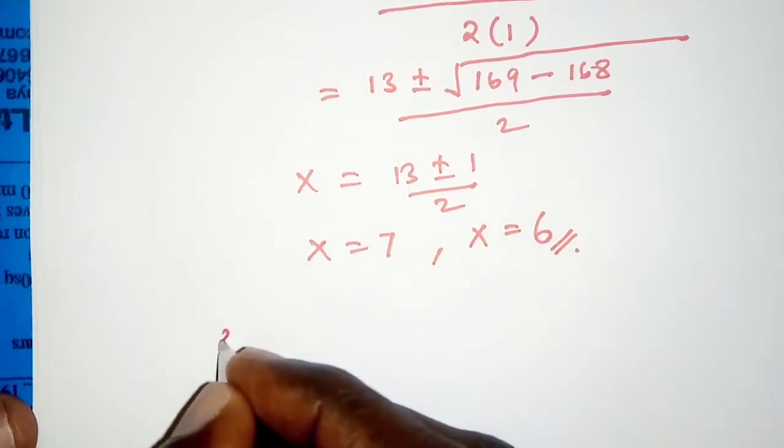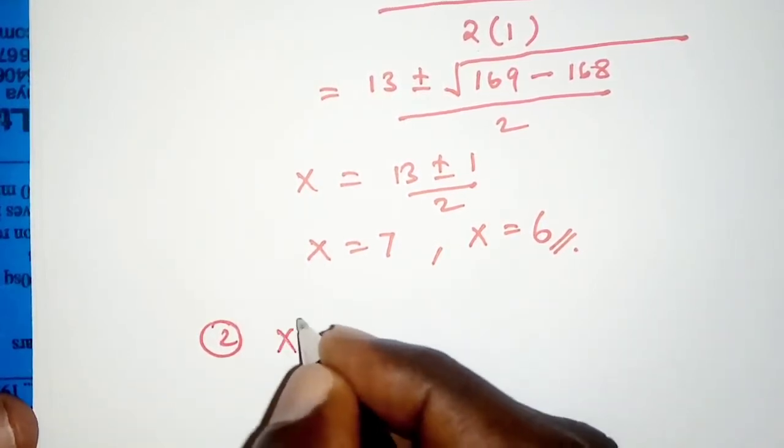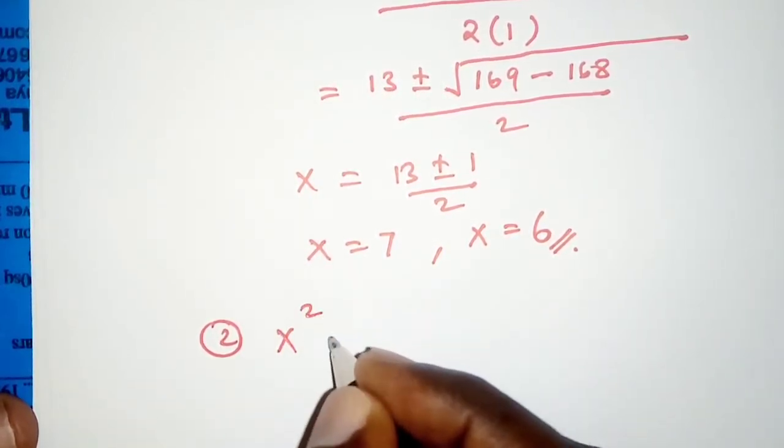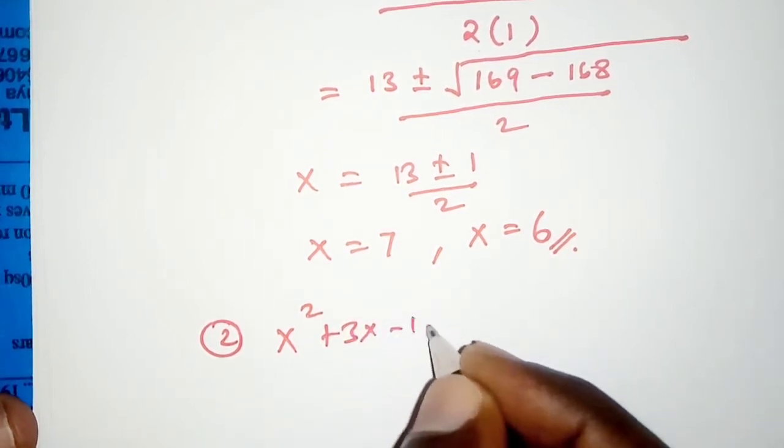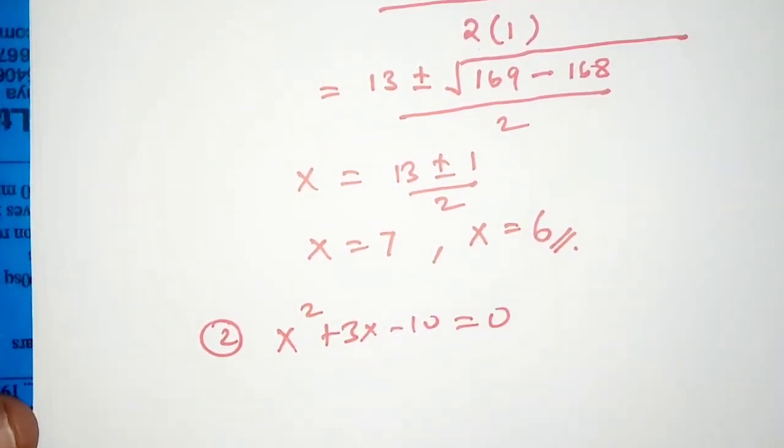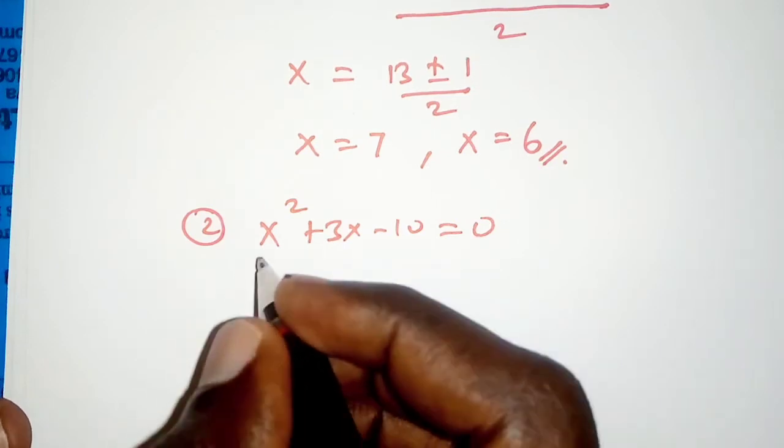The next question is let's use quadratic formula to solve this: x squared plus 3x minus 10 is 0. So here we'll try to be a bit faster.